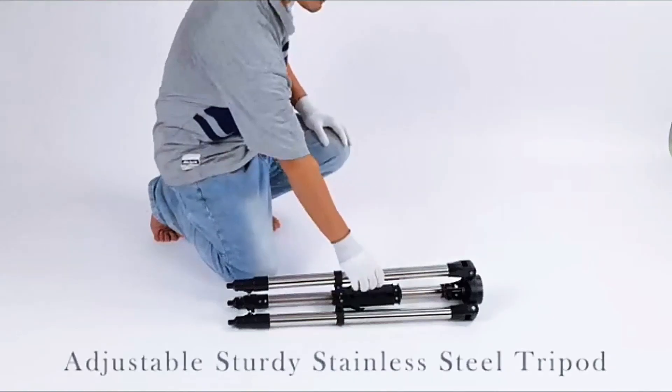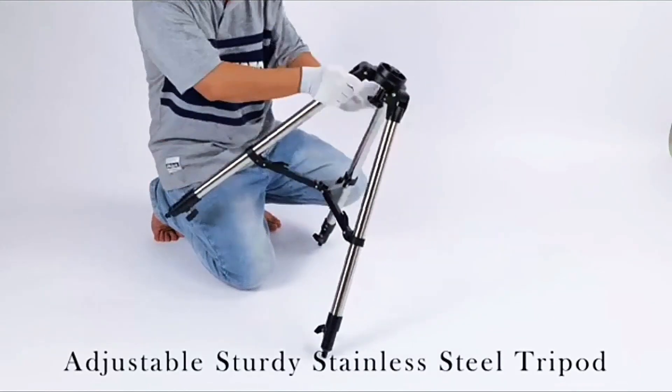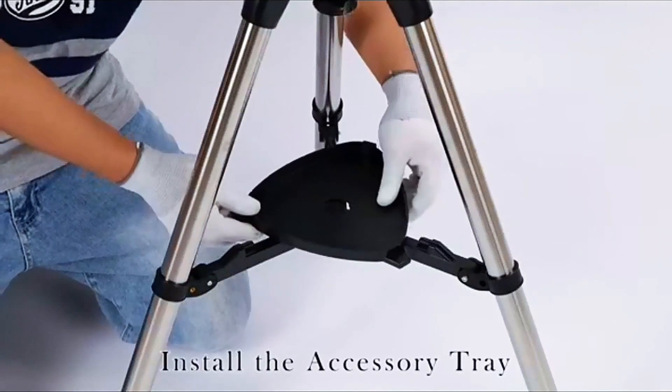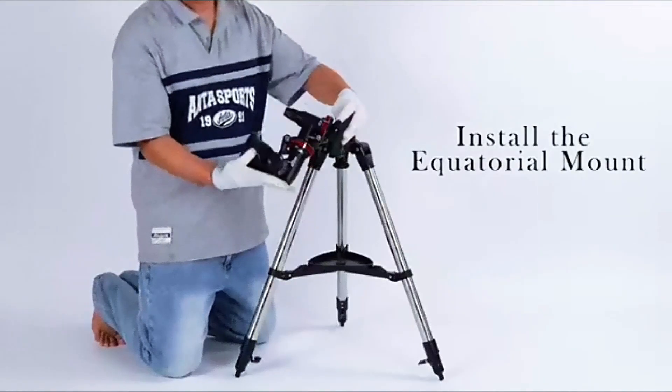Upgraded Equatorial Mount. The Reflector Telescope features a German Equatorial Mount with a dial and slow-motion cables for smooth, accurate pointing and fast tracking of celestial objects. You can enjoy the amazing process of tracking the moon's planets.